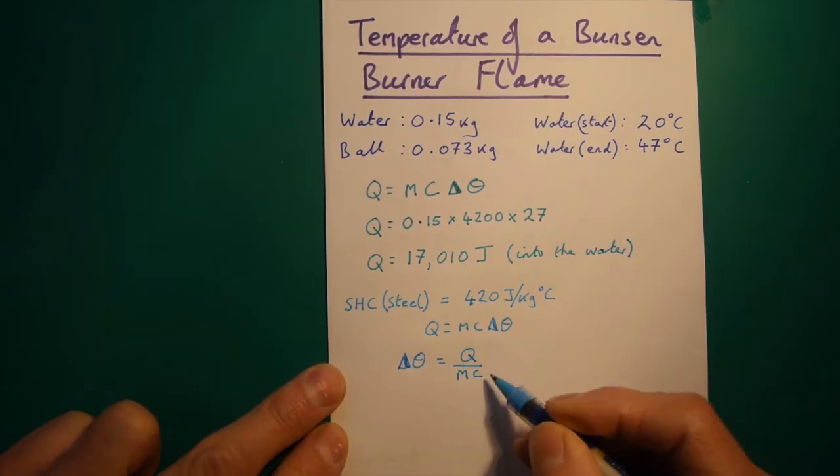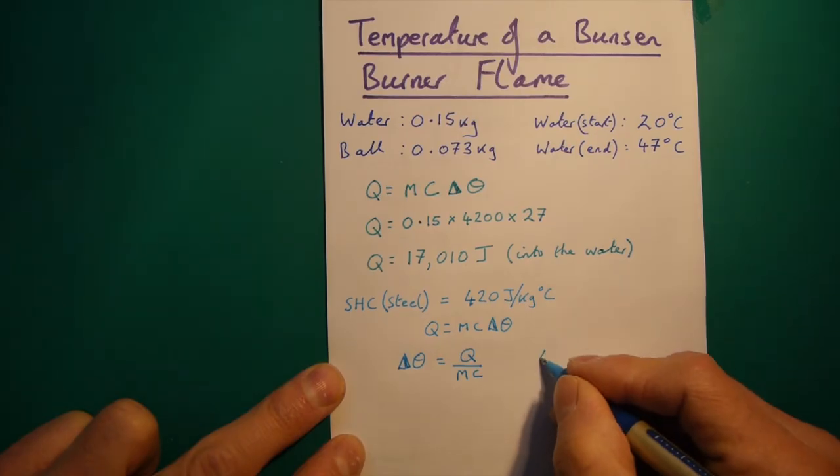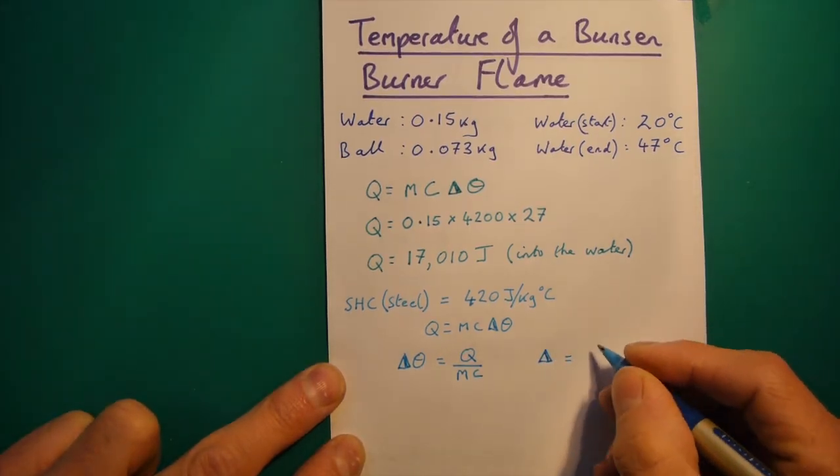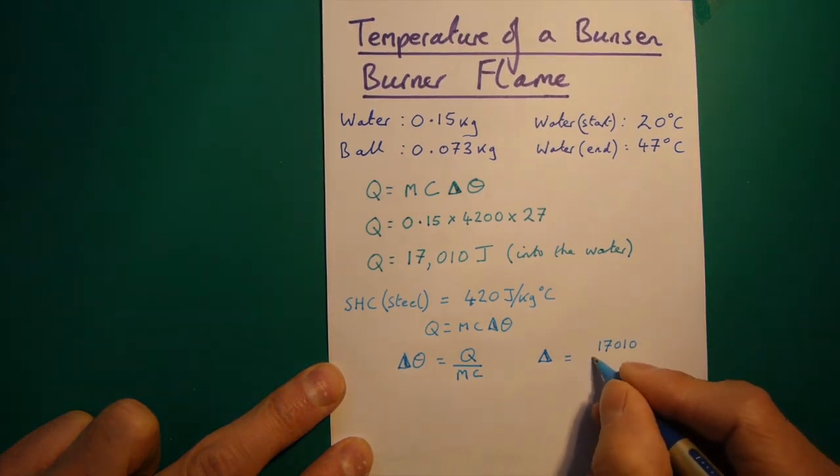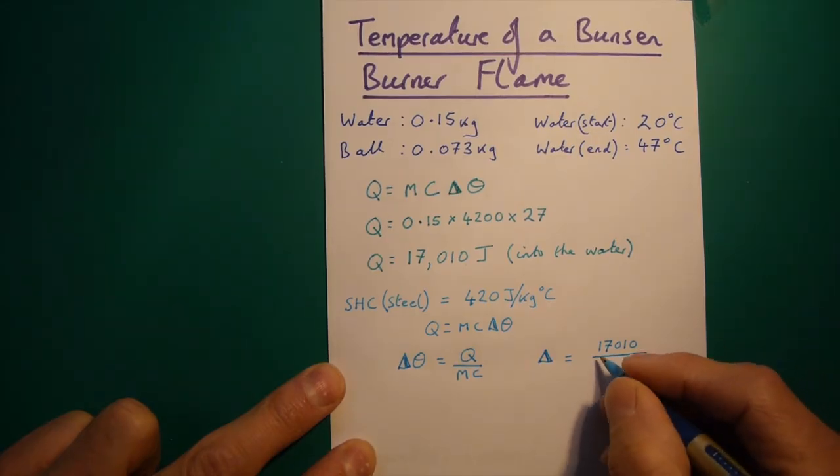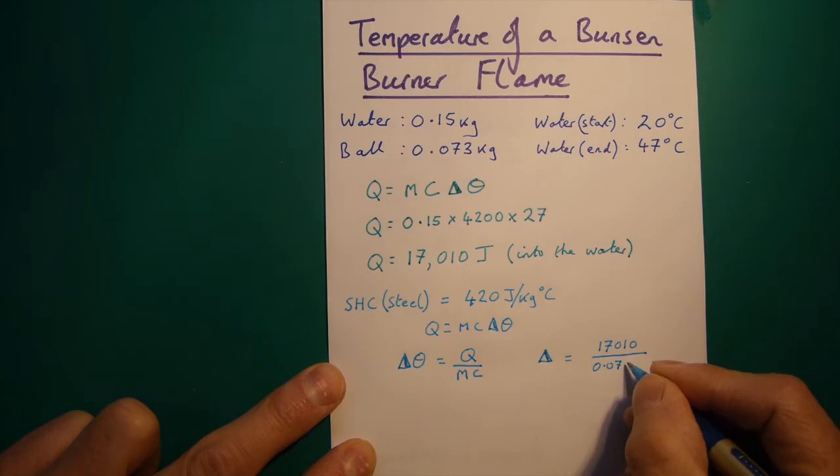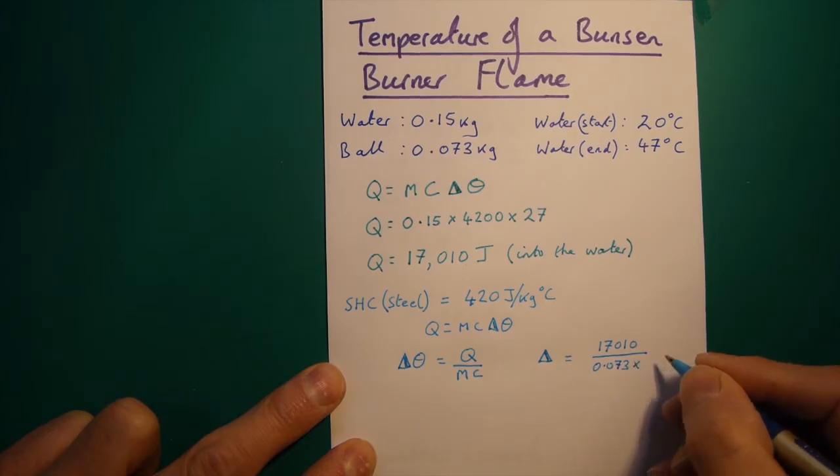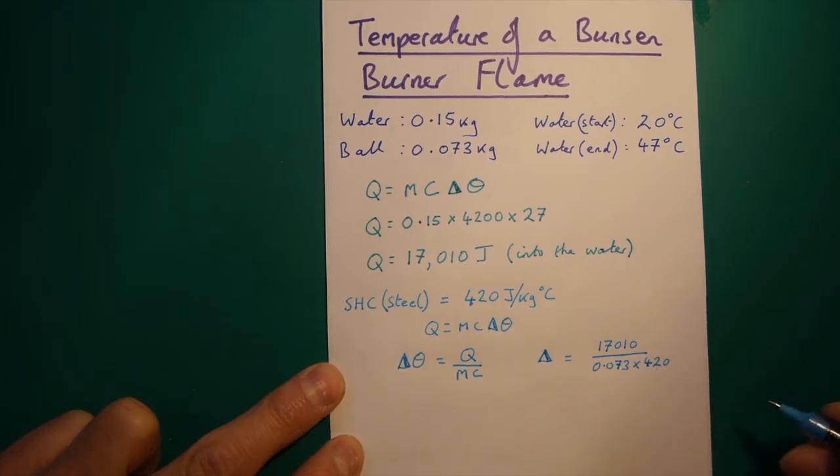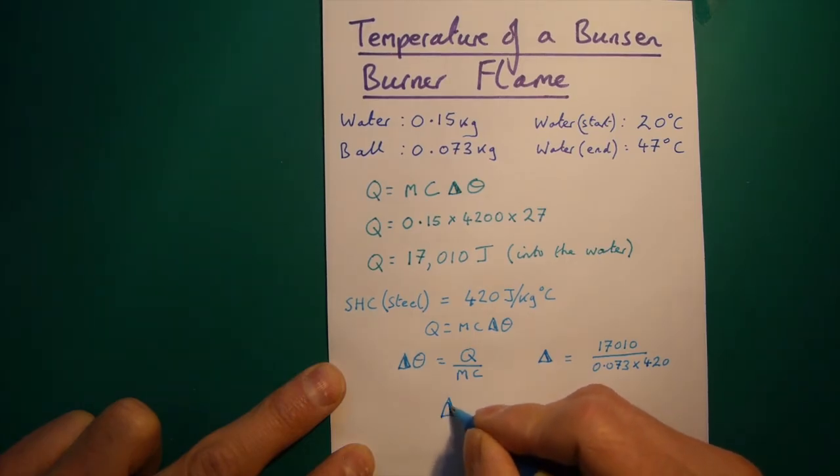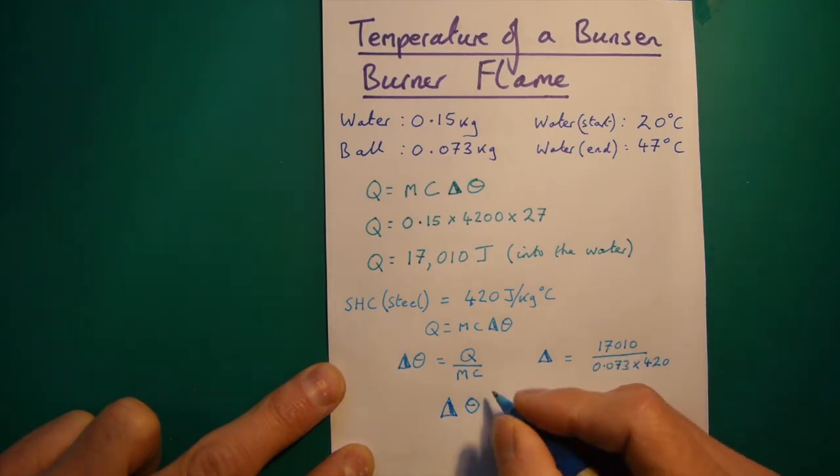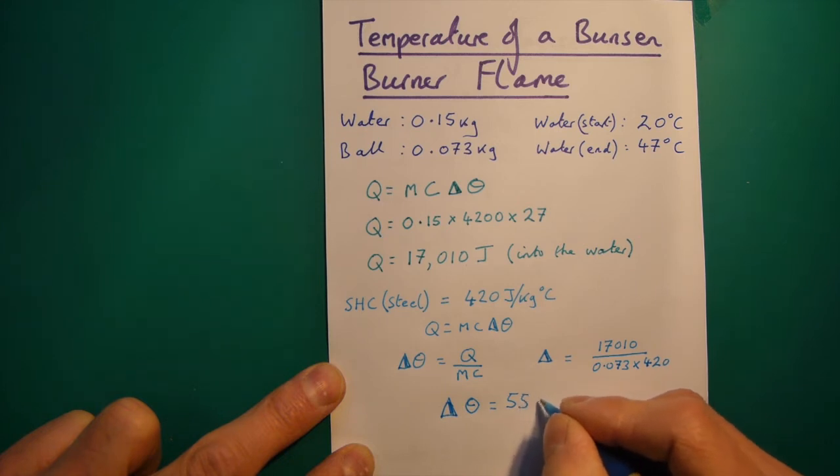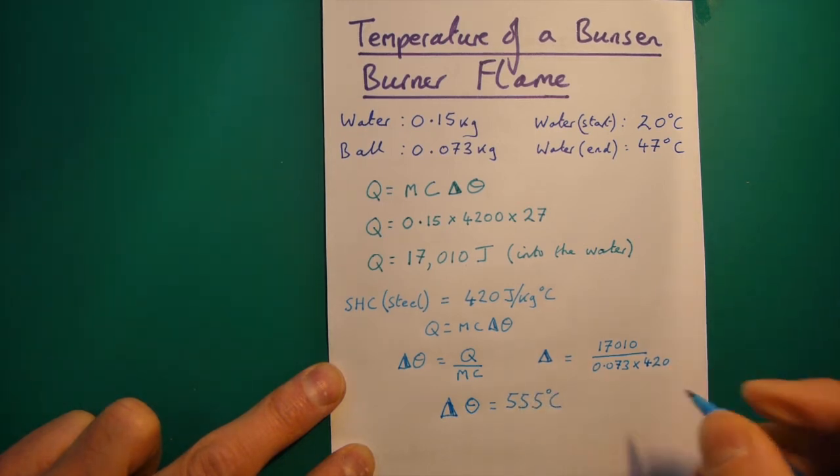So, if we put our numbers into this, the change in temperature will be equal to Q, which is 17,010 divided by the mass of the steel ball, which is 0.073 kilograms times by the specific heat capacity of steel, which is 420 joules per kilogram degrees C. And that gives a change in temperature, how much feeding this amount of energy in would raise the steel ball by, of 555 degrees C.